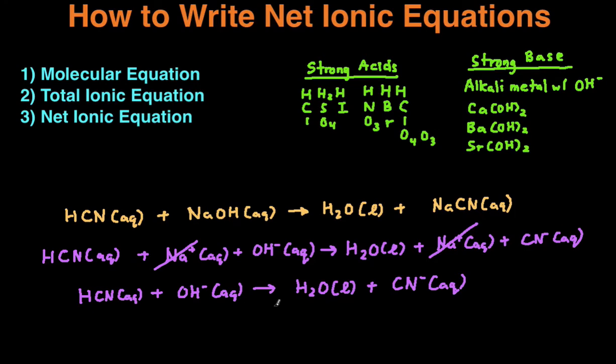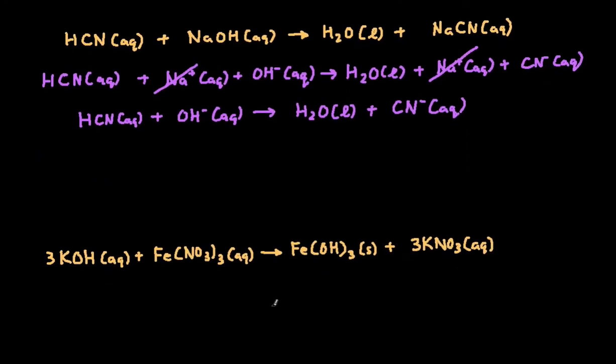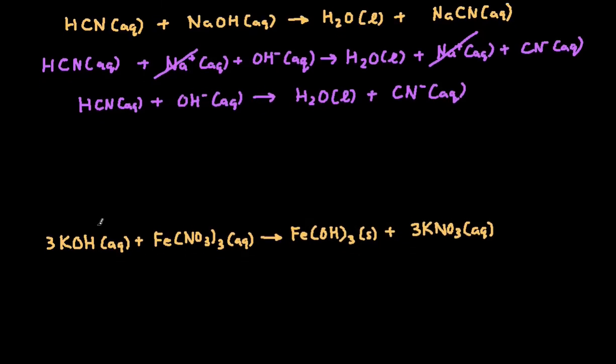All right, let's do another example together. So in this example, we have 3KOH plus iron nitrate forms iron hydroxide and potassium nitrate. So this is our molecular equation. So then next we break this up into the total ionic equation.